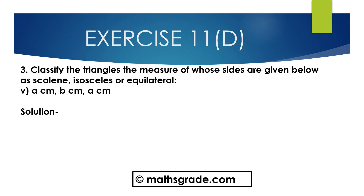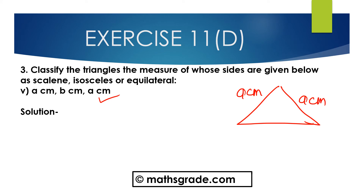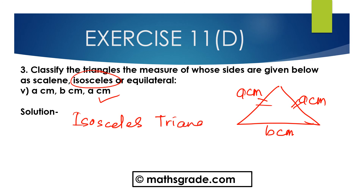Question 5, part: the sides are given as a cm, a cm, and b cm. In this triangle, two sides — both equal to a centimeter — are equal. We know any triangle whose two sides are equal is called an Isosceles triangle. So this is an Isosceles triangle.